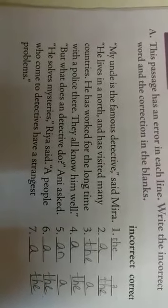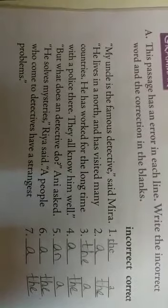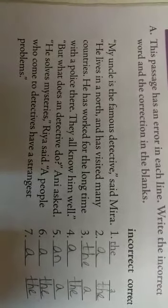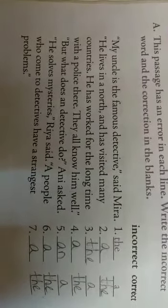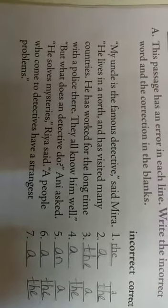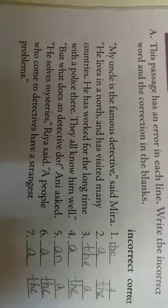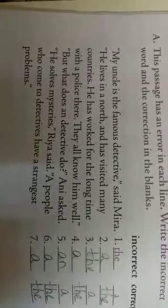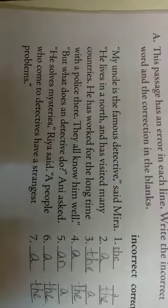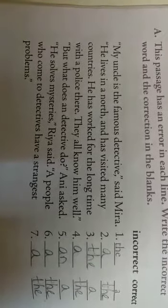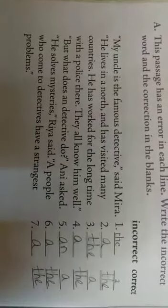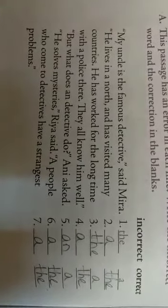We have a mistake in each line, so you should write what the incorrect word is, then write the correct word in the space provided. 'There my uncle is the famous detective said Mira' — that is incorrect. You should say 'my uncle is a famous detective,' meaning he is one person. So write 'a' as correct. 'The' is incorrect, write 'the' in the incorrect column, and 'a' in the correct column.